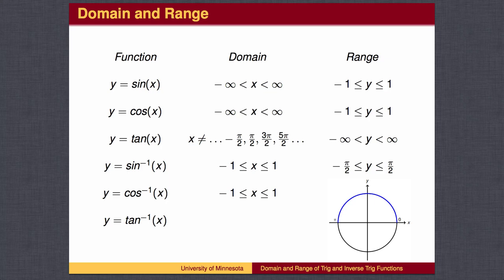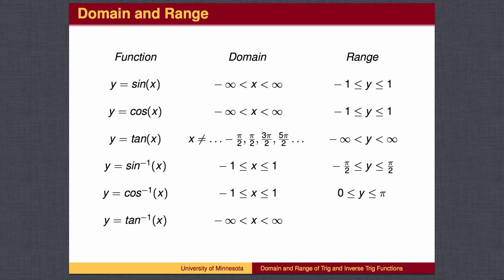For the inverse cosine function, we pick the angles on the top half of the unit circle, the angles from 0 to pi. Since the range of the tangent function is all real numbers, the domain of the inverse tangent is all real numbers. Similar to the sine function, the tangent function runs through its complete list of possible values on the right side of the unit circle, so the range of the inverse tangent function is all angles between negative pi over 2 and pi over 2. Note that the tangent is undefined at negative pi over 2 and pi over 2, so the range does not include those values.